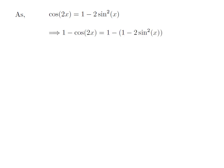So, 1 minus cosine of 2x is equal to 1 minus the whole of 1 minus 2 times square of sine of x.